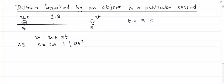This is the distance covered in the first second, this in the second second, this in the third second, fourth second, and the fifth second. I've drawn increasing distances because the object is accelerating — its velocity increases, so in every second the distance covered keeps increasing. If I want to find the distance covered in a particular second, say the fourth second, how do we find that out?